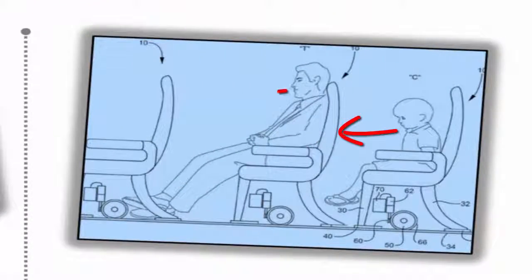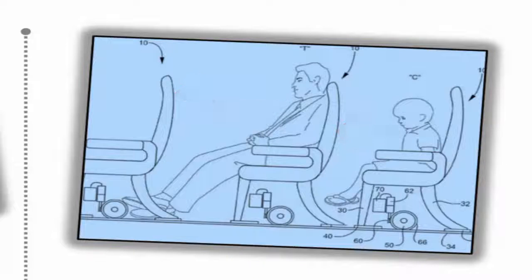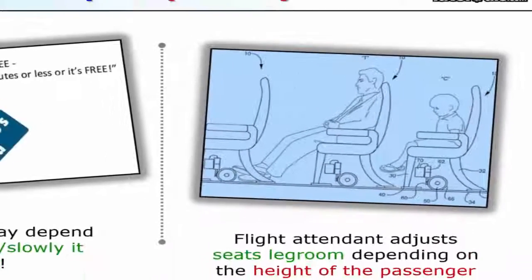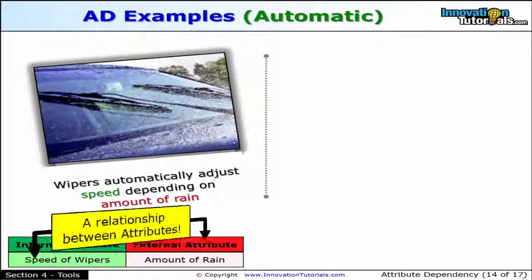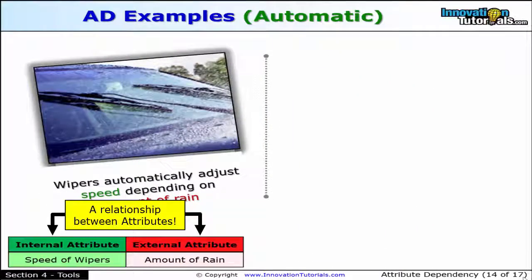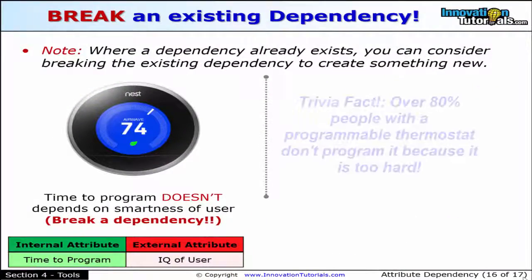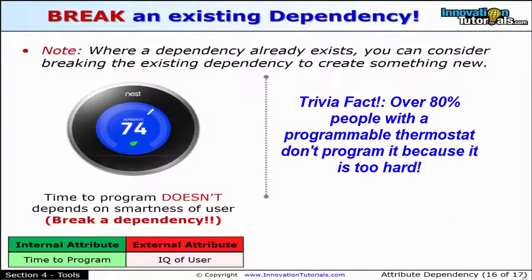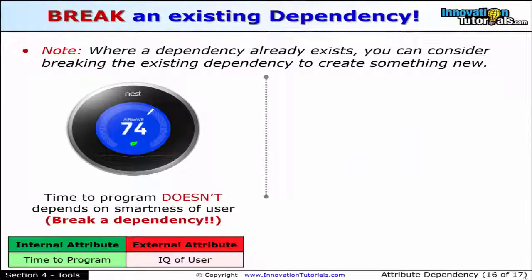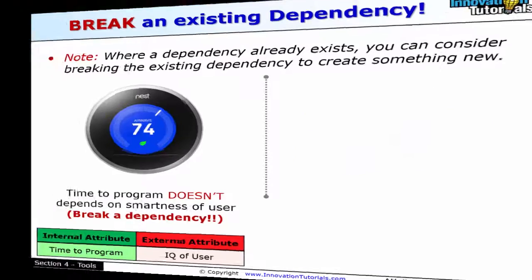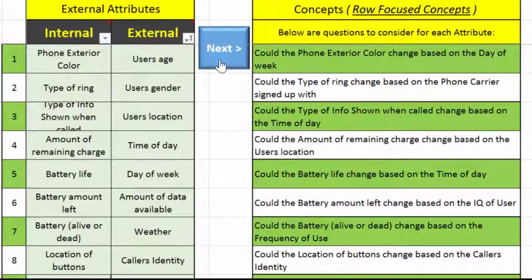This picture shows a small child and a large adult, and you can see how they adjusted one to make it easier for the other. Another example: the internal attribute is the speed of the wipers, the external attribute is the amount of rain. And another example where the external attribute is the IQ of the user — so if you're familiar with the Nest thermostat, it's a smart thermostat.